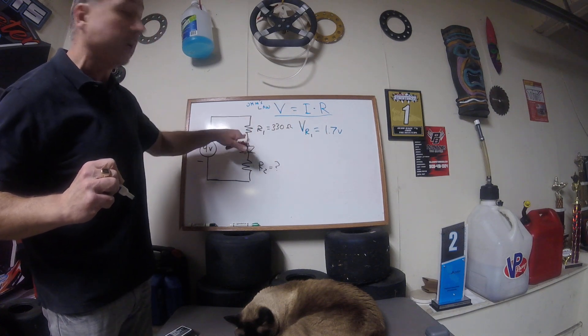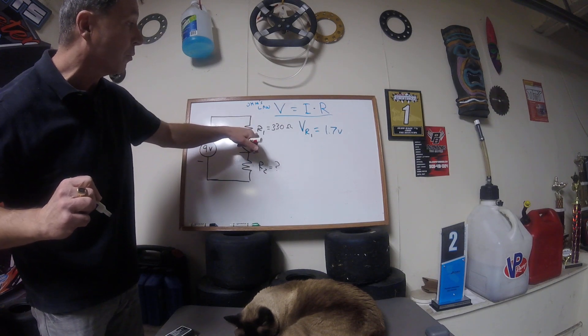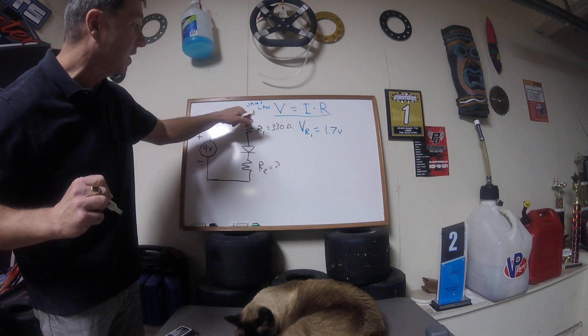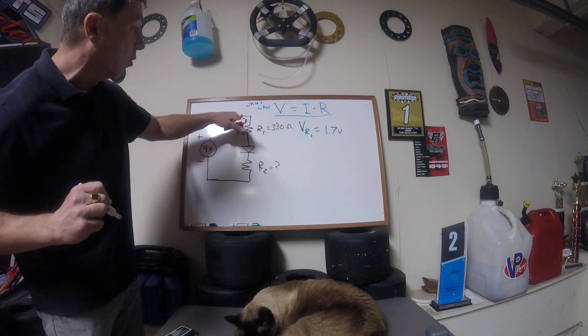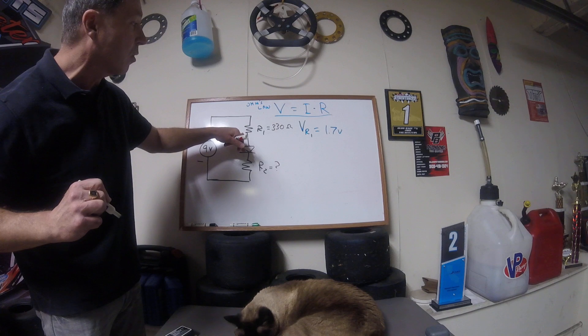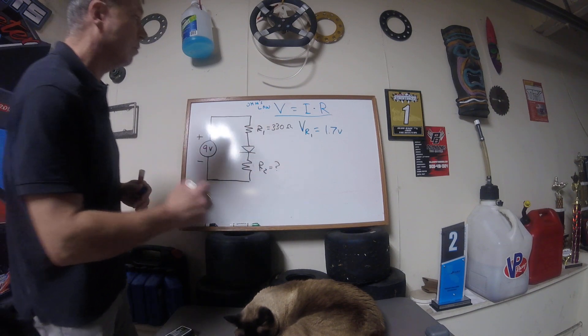And in this case, we know the resistance here at 330, and we've measured the voltage of 1.7 volts, and what we don't know is the current. But since this is a simple series circuit, if we find I through R1, we can simply say that is the total current, because there is only one path for current to flow. So whatever current is flowing through R1, that value of current must be the same in the other components. So let's go ahead and do the math.